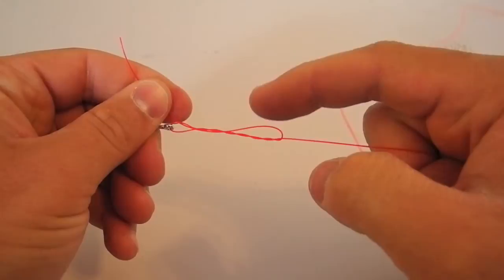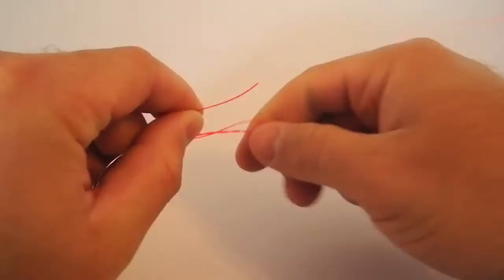Now, once I've done that, I'm going to take the tag end and go back up through the top loop right there. I do that by just grabbing it and poking it through.